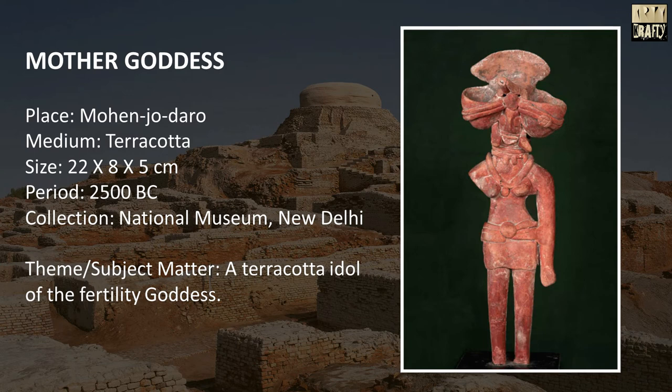Mother Goddess. Place: Mohenjodaro. Medium: Terracotta. Size: 22 x 8 x 5 centimeters. Period: 2500 BC. Theme or subject matter: a terracotta idol of the fertility goddess.